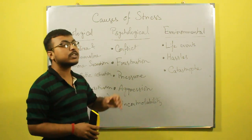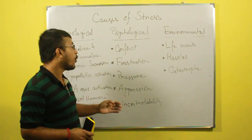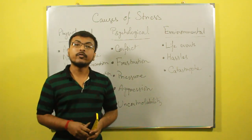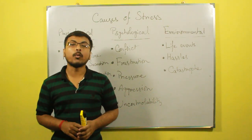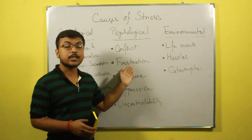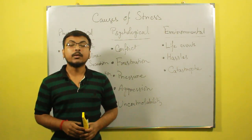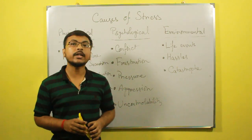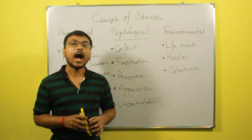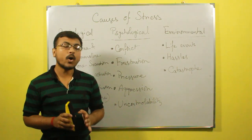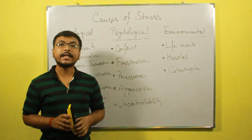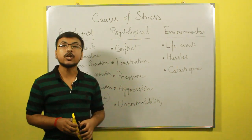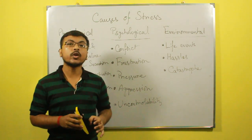Next, we discuss the psychological causes of stress. Under this category we have conflict, frustration, pressure, aggression, and uncontrollability. Conflict is a painful emotional state that results from two opposed or contradictory wishes. Frustration is an emotional state which results from blocking of our desire or need. When the environmental demand is high, we feel under pressure and this causes stress. Aggression is an action that causes harm and it is a reaction to frustration. Uncontrollability refers to when we feel unable to control our environmental demands, which causes stress.